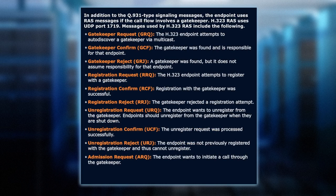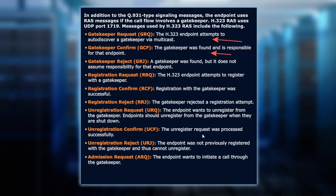Now let's throw a gatekeeper in the mix. These are some of the common gatekeeper messages we might see running through our network. There's a GRQ — this is when the endpoint attempts to auto-discover a gatekeeper; you might see that multicast message. There's the GCF, which is the confirm — okay, I found you, let's register. And a gatekeeper reject, the GRJ, if the gatekeeper doesn't want you registering with it.